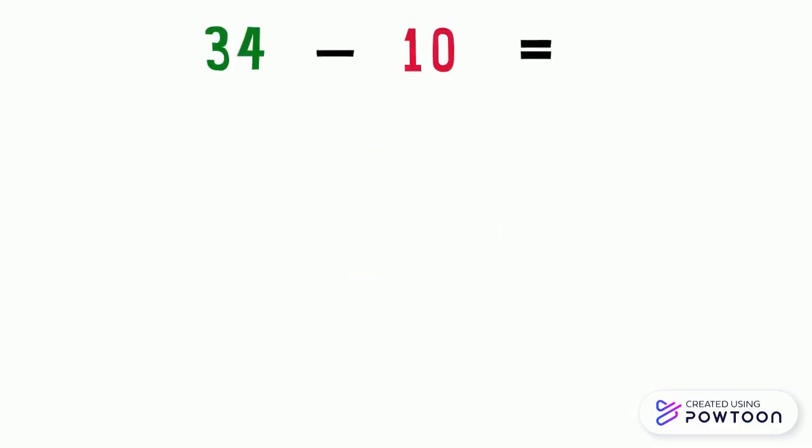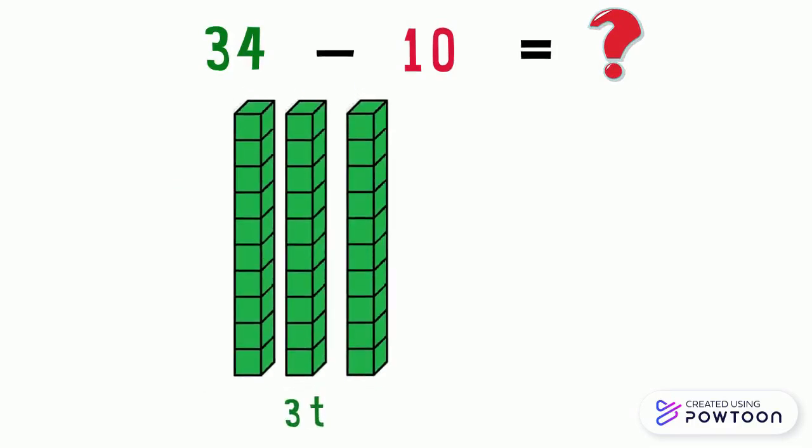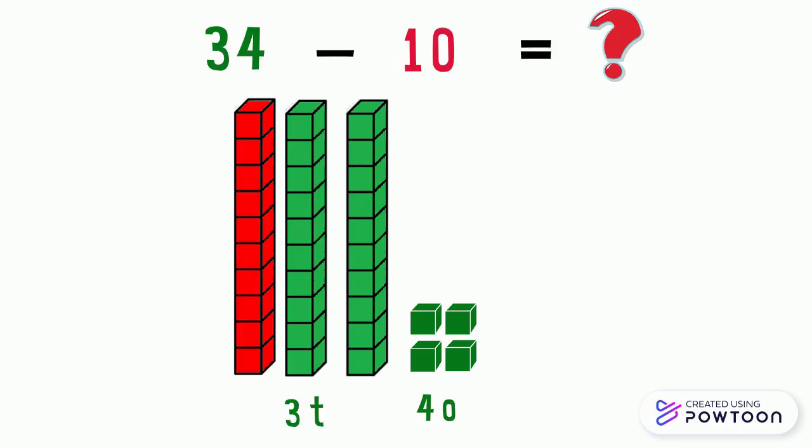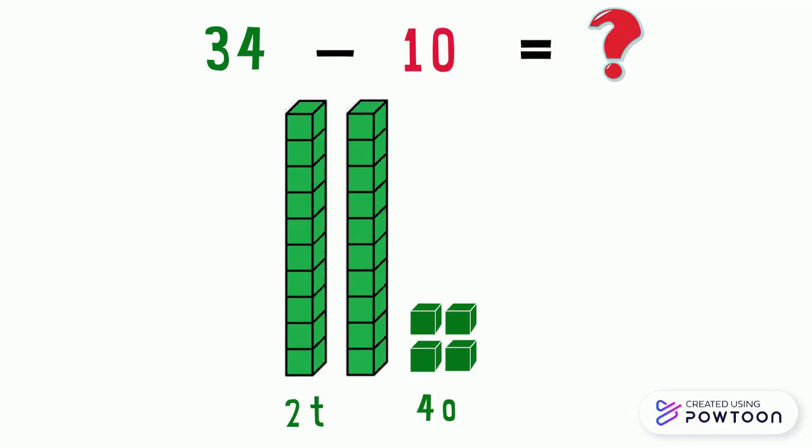What is 34 minus 10 equal to? In the number 34, there are 3 tens and 4 ones. Subtract 10, which means we should take away 1 ten. We have 3 tens. Let's take away 1 ten. We are left with 2 tens, so the tens digit is decreasing by 1.